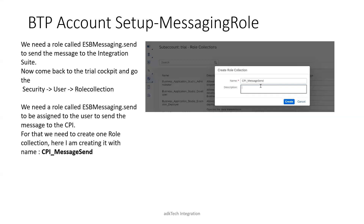In the meantime, come back to the trial cockpit. We need to assign a messaging role to the user so it can be used for CPI messaging. Go back to Security, Users, and Role Collections. Create a new role collection — for example, name it 'CPI_message_send'. We need a role called 'ESB Messaging dot send' to be assigned to the user so we can use it to send messages to the CPI.